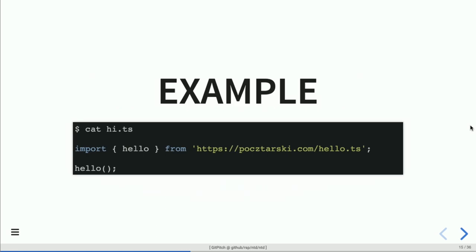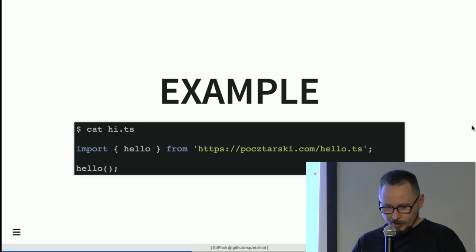Here's a simple 'hi.ts' file. It consists of two lines: one importing 'hello' from a file I published on my website. Then you just run it — no NPM install step, no need to download the file, no node_modules folder, no dependencies. You can directly require files from the internet. If you require from GitHub, you can use tags for versions. If anyone just runs it, it will download the hello function and execute it.